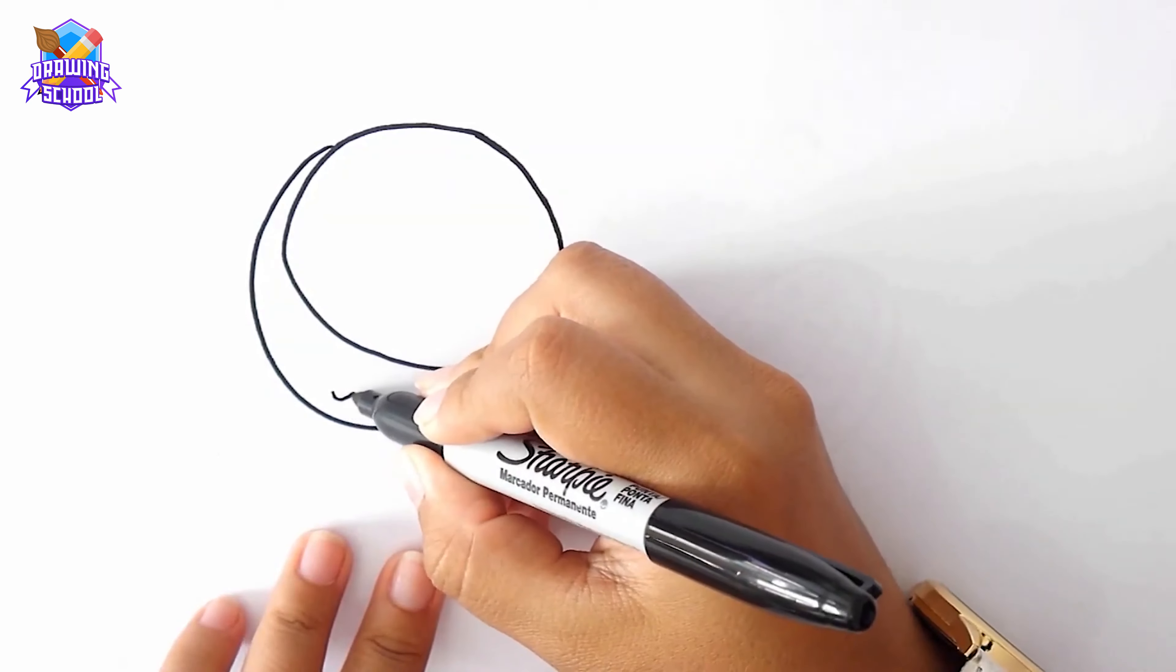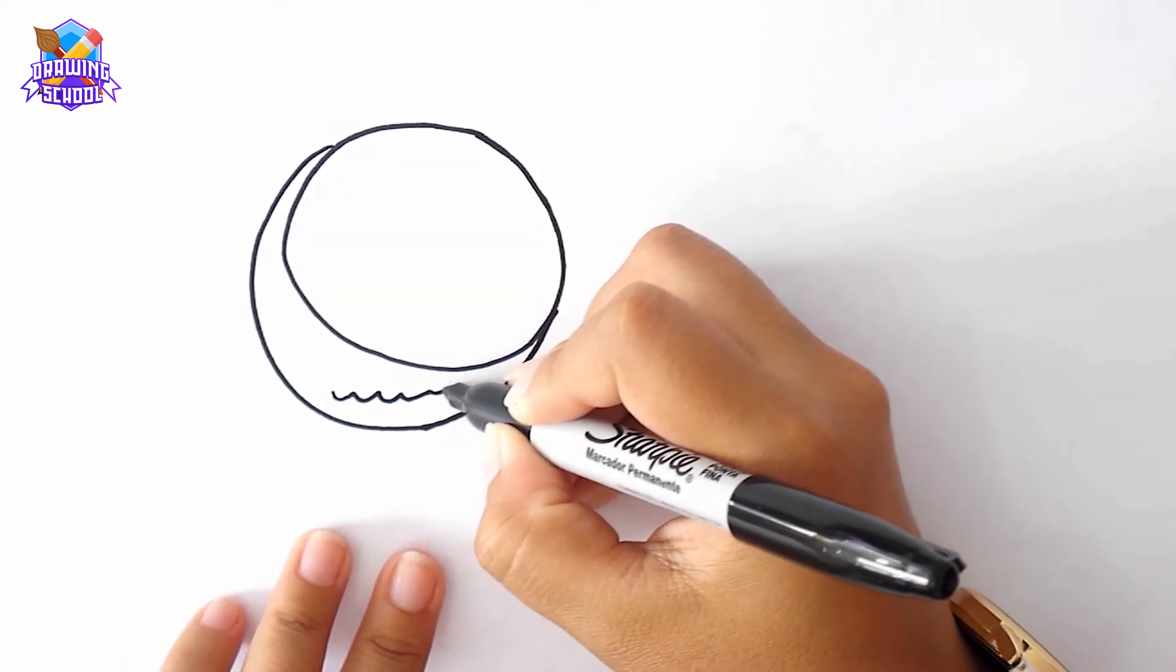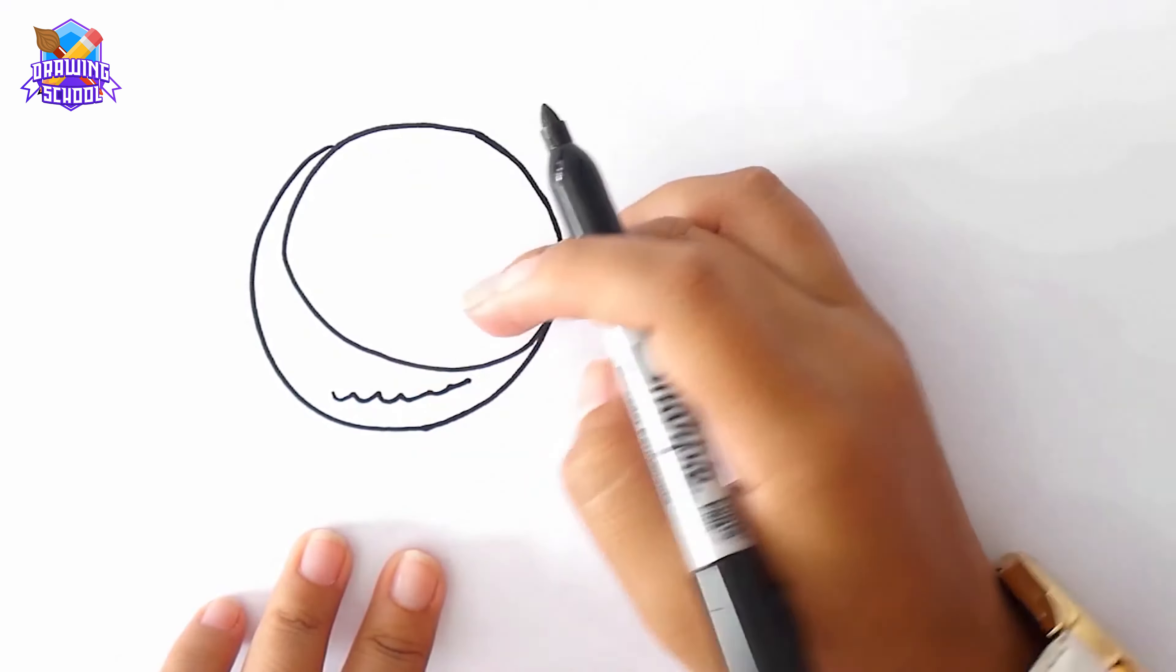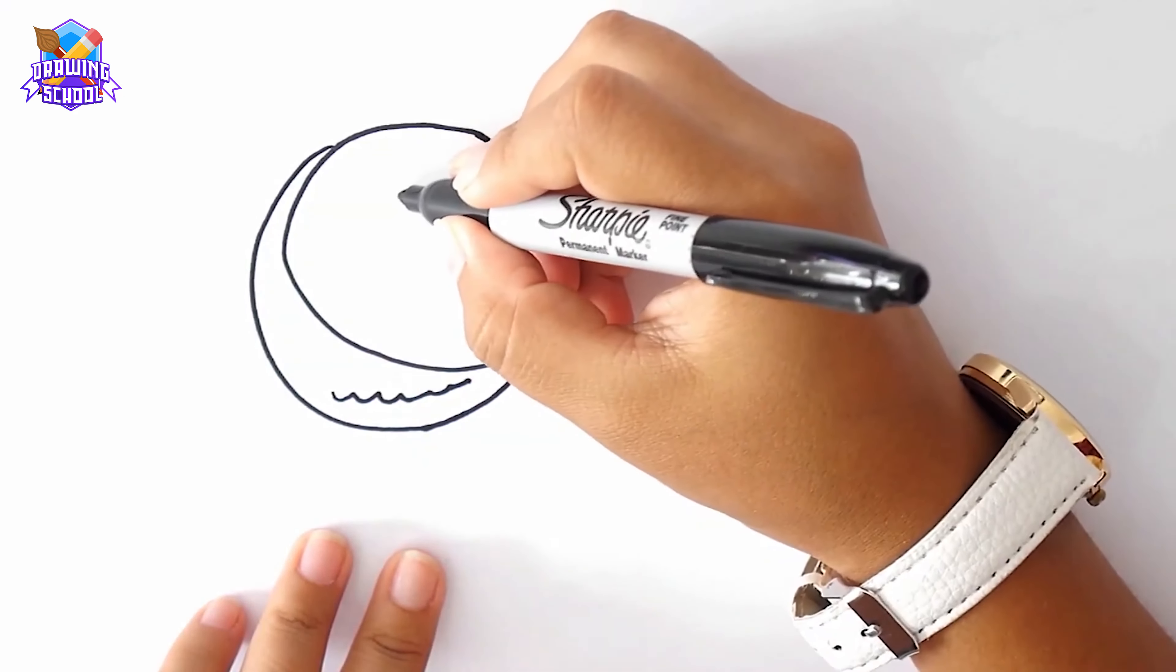In here, I'm going to start drawing some wavy lines like this and a kind of flower inside it.